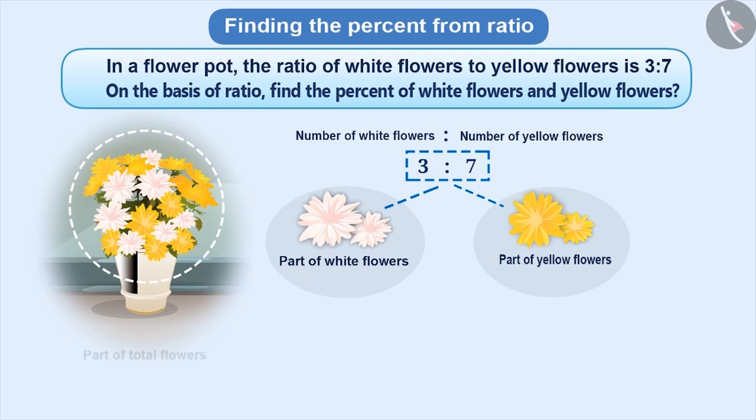In this way, we can say that here 3 plus 7 is equal to 10, out of which 3 parts are white flowers. Therefore, part of white flowers is 3 by 10, and yellow flowers will be 7 by 10.